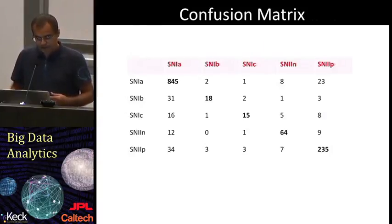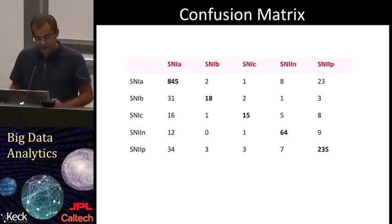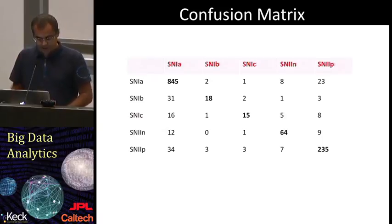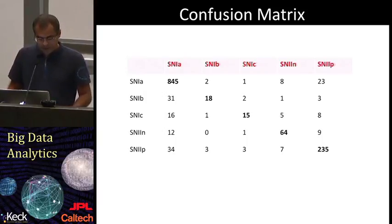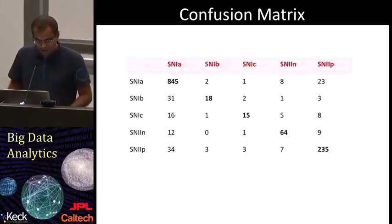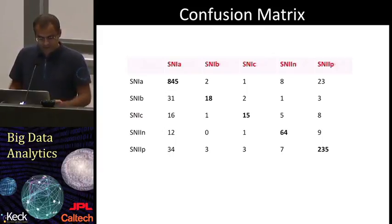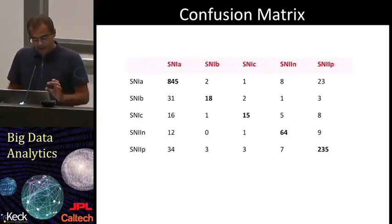The confusion matrix can also be generalized for M classes. Given M classes, a confusion matrix is an M by M table. For a classifier to have good accuracy, most of the samples should be represented along the diagonal, and the entries in the other cells should be close to zero. In this example of supernova subtype classification, we can see that we are able to classify supernova type 1A very well, but most of the supernova type 1B are confused with 1A. The confusion matrix can also help understand which classes are overlapping and may need further analysis.